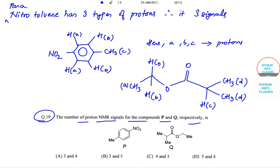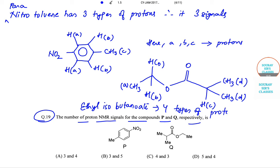So ethyl isobutonate has four types of protons and therefore gives four NMR signals. So the correct answer to this particular question will be option number A.